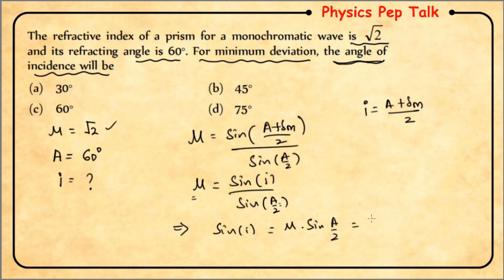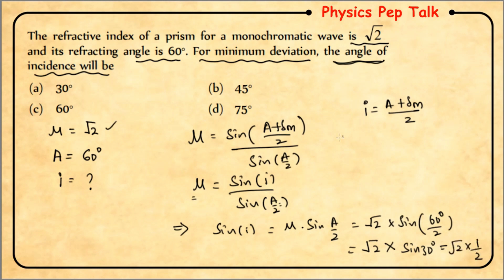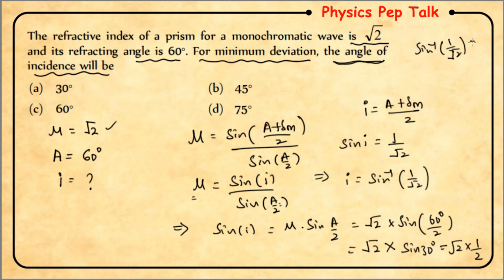Substituting μ = √2 and A = 60°: sin(I) = √2 × sin(30°) = √2 × (1/2) = 1/√2. Therefore I = sin⁻¹(1/√2) = 45°. Option B is the correct answer for this question.